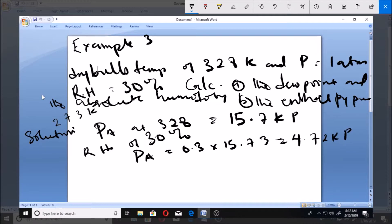For part (a), the dew point: we know that dew point is when Pa equals Psat, when the vapor pressure equals partial pressure. From here we have 4.72 kilopascals. At this point, if we trace the temperature, the corresponding temperature is 304.5 kelvin. So that is the dew point.